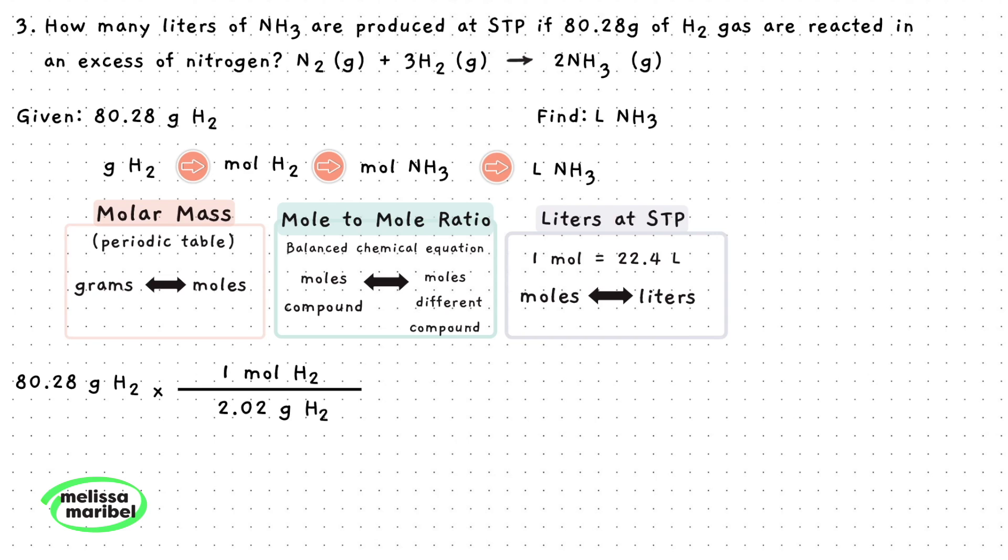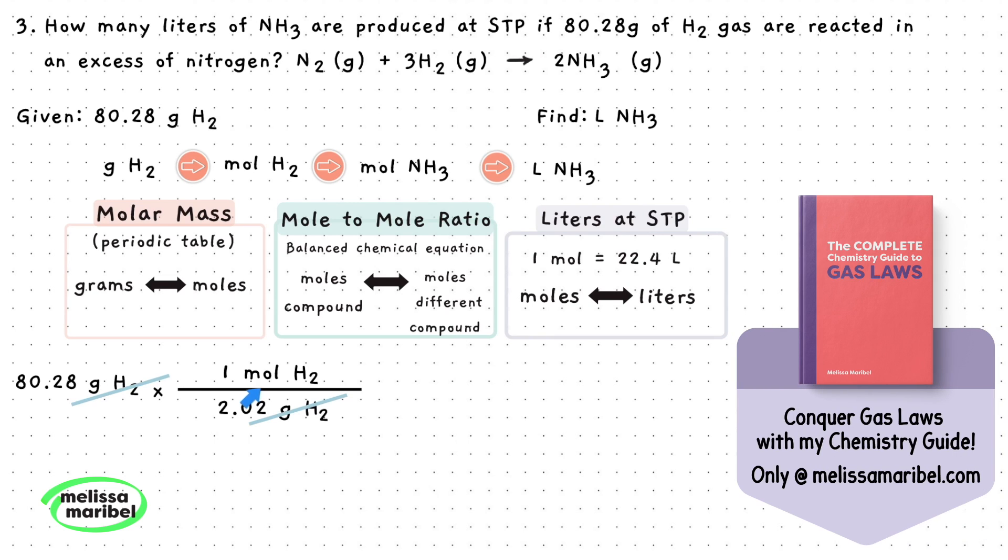Align the units so they can cancel, so place the grams of H2 on the bottom and one mole of H2 on top. The grams of H2 cancel and we now have moles of H2.